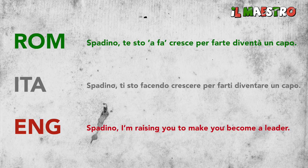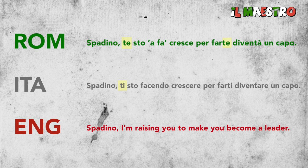Clip: 'Spadino, te sto a fa crescere per farti diventa un capo.' Standard Italian: 'Spadino, ti sto facendo crescere per farti diventare un capo.' — 'Spadino, I'm raising you to make you become a leader.' The pronoun 'ti' (you) becomes 'te' before the accented syllable 'sto.' Also, 'farti' is used in place of standard 'farti' before 'diventare' → 'diventa.' Notice the recurring feature of dropping syllables at the end: 'crescere' becomes 'cresce,' 'diventare' becomes 'diventa.'